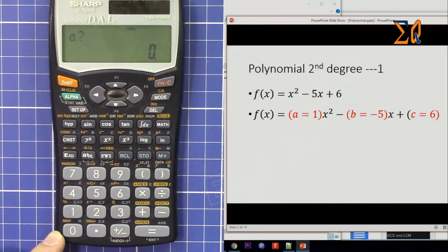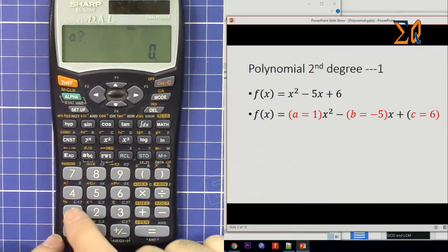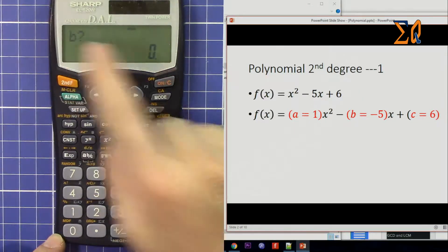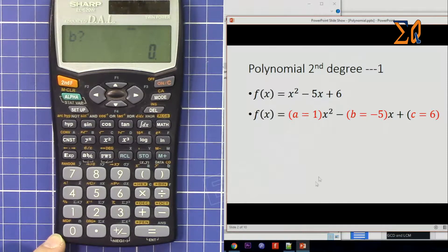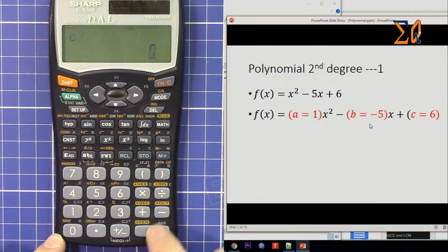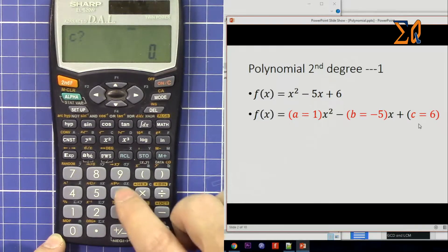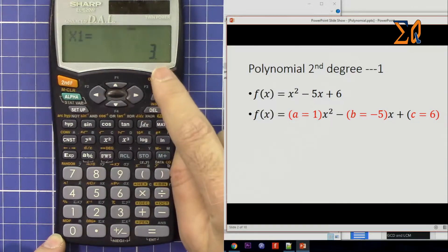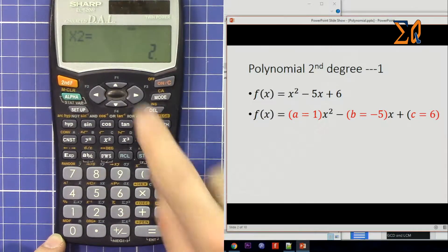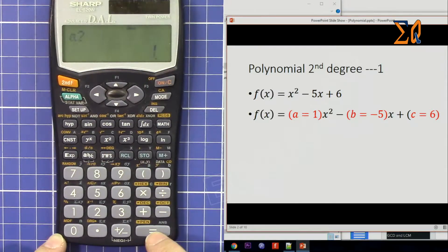Now it asks for a. I'm pressing 1 and then equal sign, and then it asks for b. b is -5, and then c is 6. So x1 is 3, x2 is 2, and that's it. So this was the solution for that.